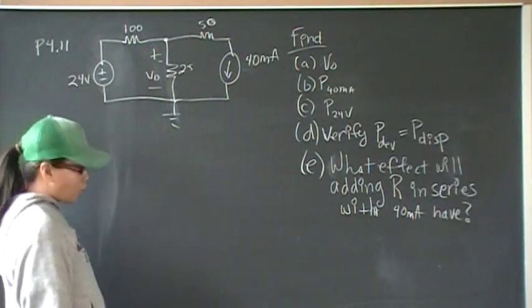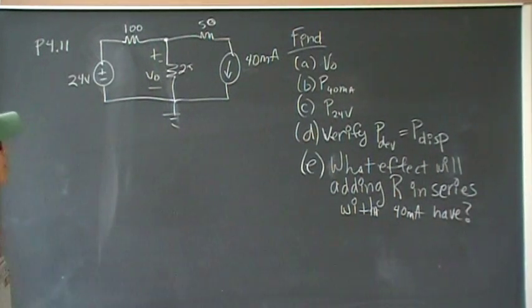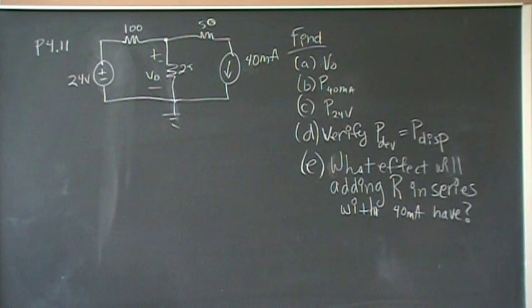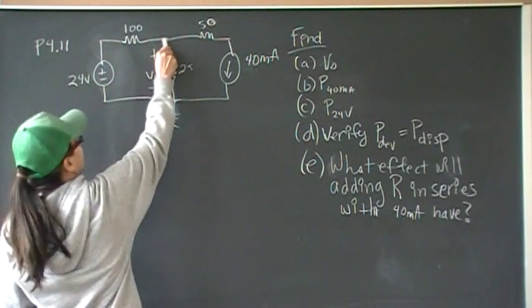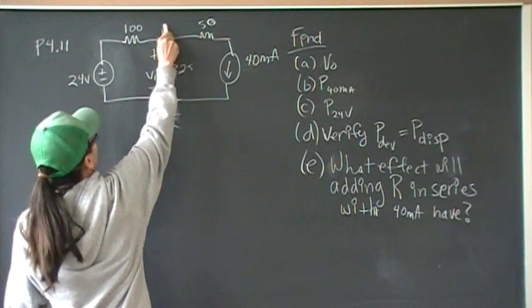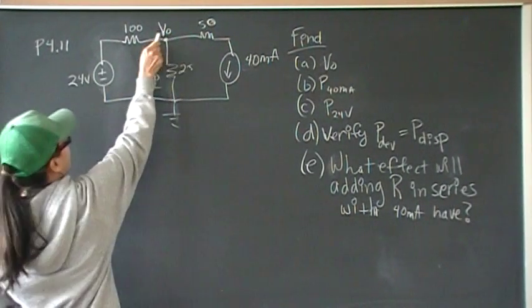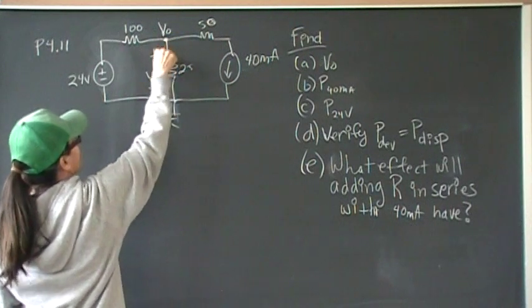We added a 50 ohm in series from the previous problem. So we need to find what V naught is, and to do that, we're going to use KCL at this node. So KCL at V naught, we're looking for this current, plus this current, plus this current.